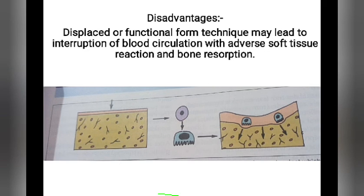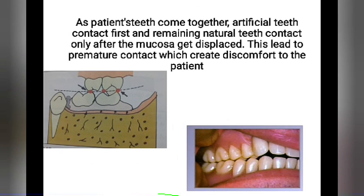What are the disadvantages of handles modification? The displaced or functional form technique may lead to interruption of blood circulation with adverse soft tissue reaction and bone resorption. Also, as the patient's teeth come together, artificial teeth contact first and the remaining natural teeth contact only after the mucosa gets displaced. This leads to premature contact, which creates discomfort for the patient.